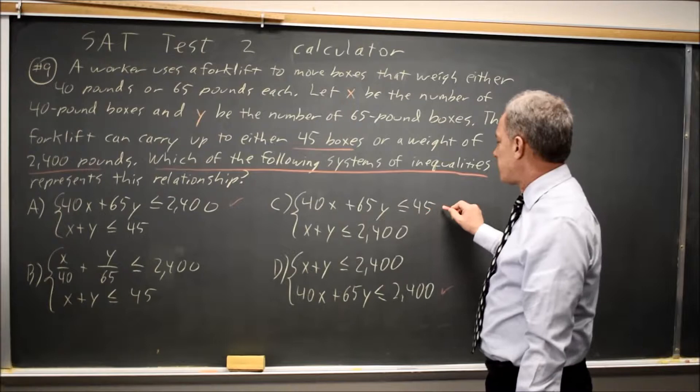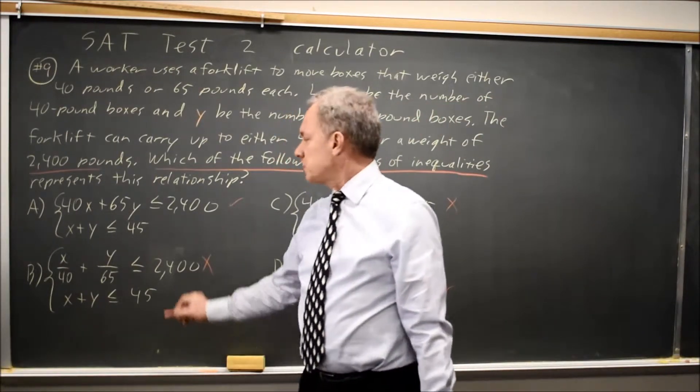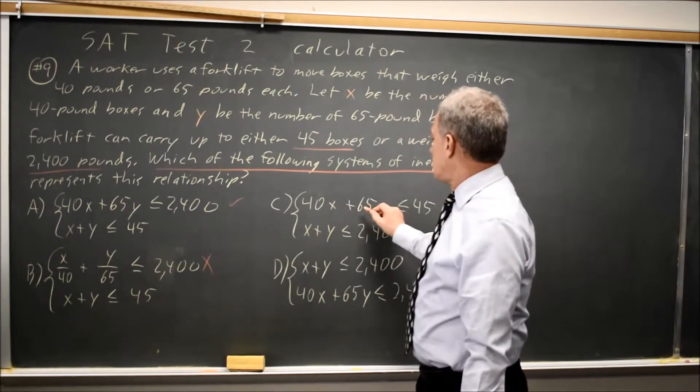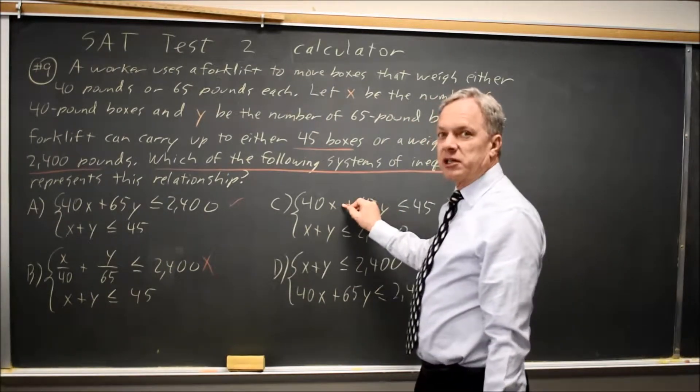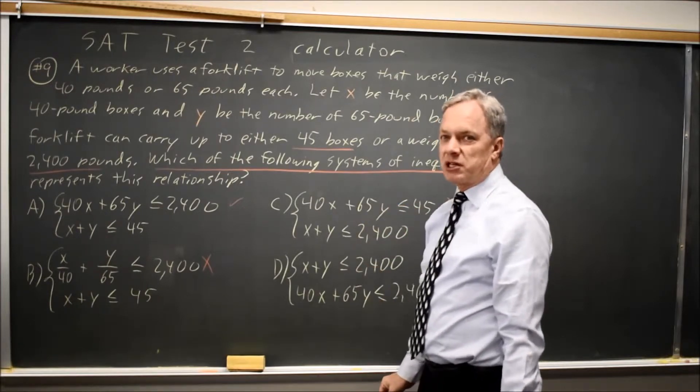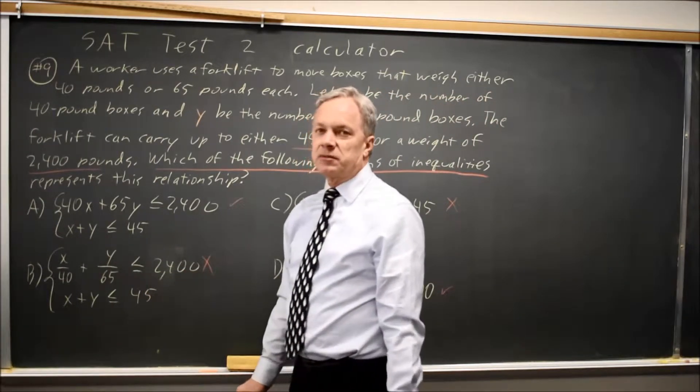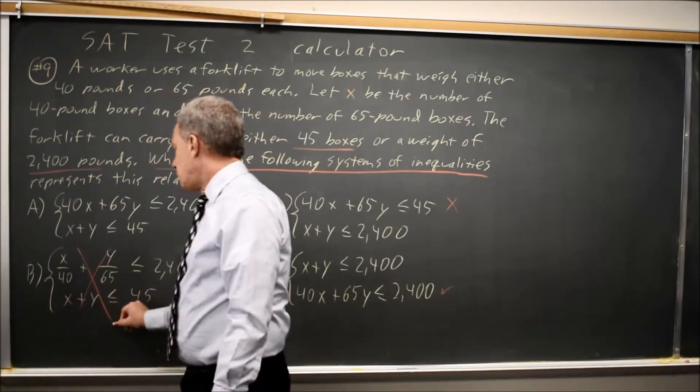It's not 40X plus 65Y less than or equal to 45, and it's not this choice either because this one says the total weight has to be less than 45, which is not correct—you want the number of boxes less than 45. And this one, that is not the total weight. So choices B and C are wrong.